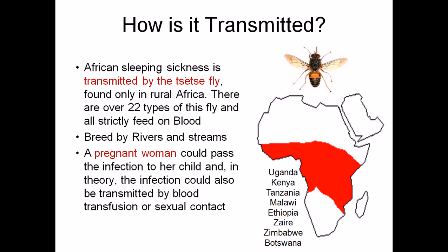The vector for this disease is the tsetse fly. It is found in rural Africa; there are over 22 types of this fly and all strictly feed on blood. They usually breed on rivers and streams, then come and infect individuals by feeding on blood, spreading trypanosoma from their salivary gland into the bloodstream of human beings. Pregnant women can also pass this disease to their child, so it can be congenital.